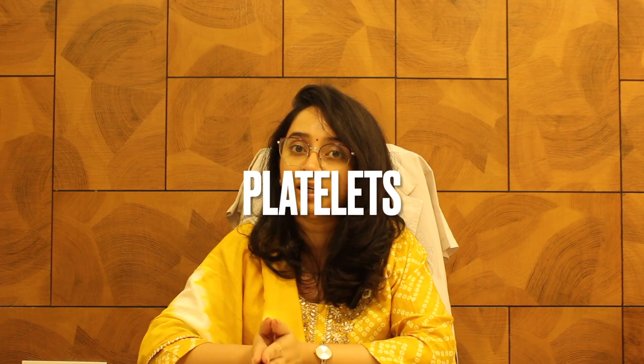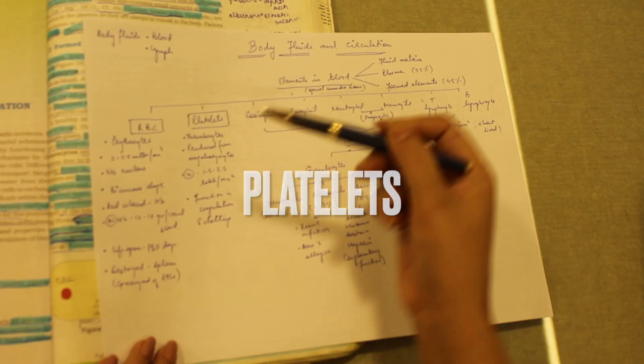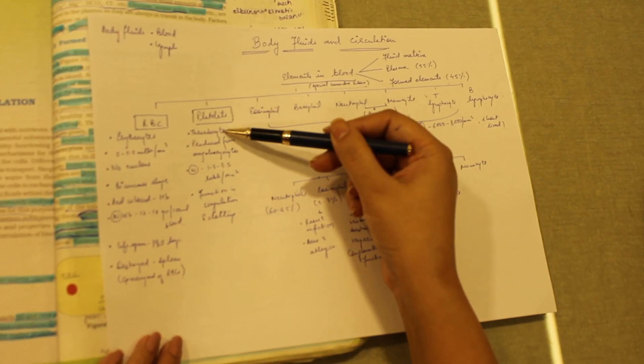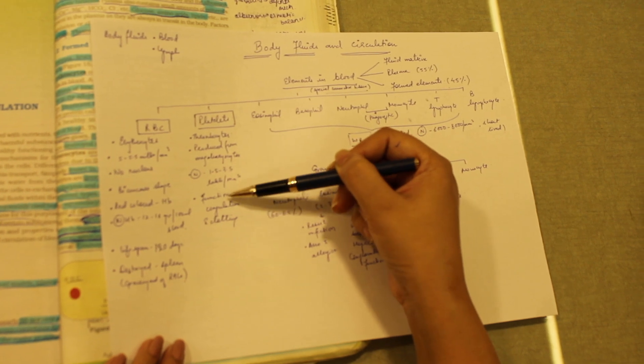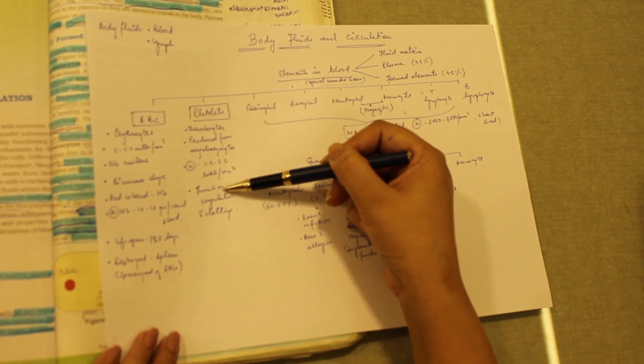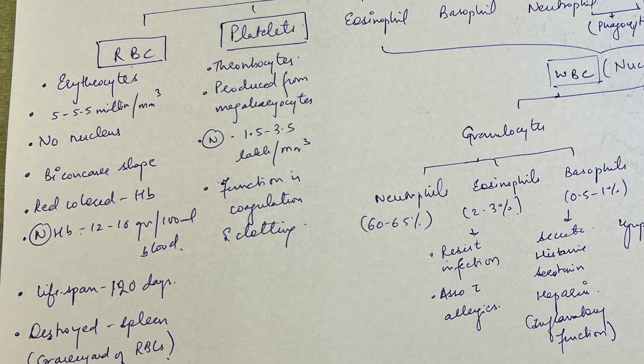Then we come to platelets. Important points: platelets are called thrombocytes, they are produced from megakaryocytes, they help in clotting and coagulation, and the normal count is 1.5 to 3 lakh. That's it — you are done with platelets.